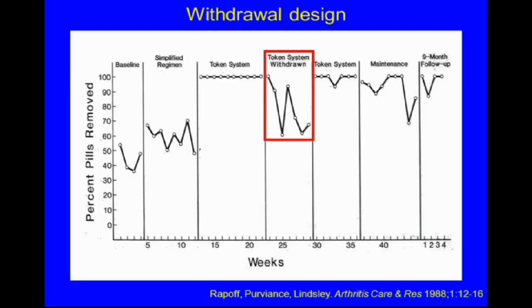This is an example of a withdrawal design using one subject from Rapoff et al., 1988. We were looking at adherence to medications in a young man who had arthritis. We started out with a baseline condition using pill counts as the measure of adherence, with weeks on the x-axis. During the first week he was about 50% adherent, which is typical with a chronic illness. Then unexpectedly the physician changed his regimen from three times a day to twice a day, simplifying it. We made this a condition, and as you can see, there was some increase in adherence just by simplifying the regimen.